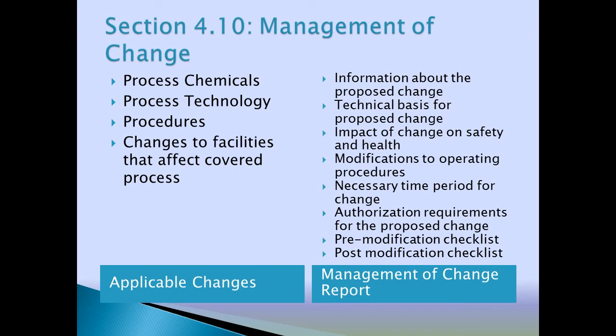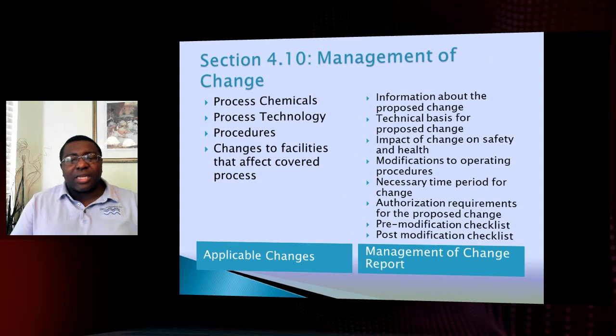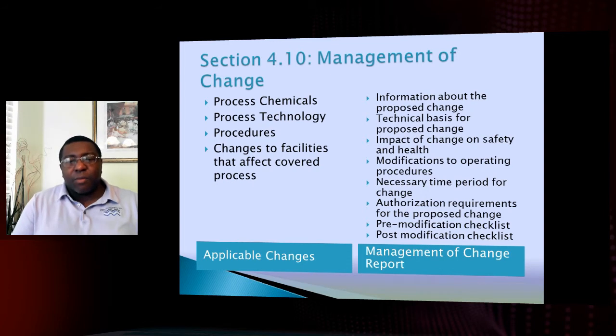These are the different components that are applicable changes. For example, if you have a new facility being built and you used to have only two or three ton cylinders of chlorine, and your plant is now going to upgrade to six or seven, that's a significant change. The regulation states that you need to do a management of change and submit the formal paperwork for that.